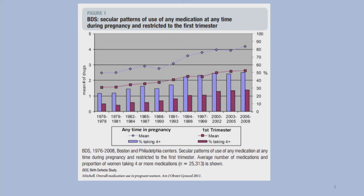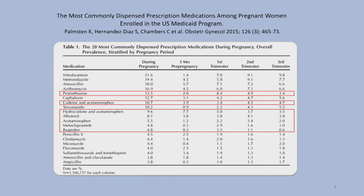This is a paper talking about medication use during pregnancy and specifically in the first trimester. These curves from 1976 through 2008 show a rise not only in the number of medications women are taking during the first trimester, but at any time during the pregnancy — from about one to two medications in the first trimester up to two to three, and from two to three medications anytime during pregnancy up to four to five.